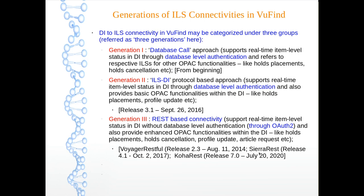What are these improvements? These three generations of connectivity between VuFind and ILS: Generation 1 is based on the database call approach — specifically in the context of Koha-VuFind connectivity — which requires database-level authentication and has been there from the beginning. Generation 2 is based on the ILSDI protocol to connect Koha and VuFind; still requires database-level authentication but also provides basic OPAC functionalities within the DI like hold placement, profile update, etc. The first Koha ILS driver came inside VuFind in release 3.1 in 2016. Generation 3 is the REST-based connectivity, where database-level authentication is not needed — authentication is done through OAuth2, a more secure protocol — and it also ensures many enhanced OPAC functionalities within the discovery interface like holds placement, holds cancellation, profile update, article request, etc.